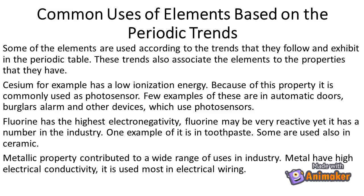Chlorine has the highest electronegativity. Although chlorine may be very reactive, it has a number of uses in industry — one example is in toothpaste, and some are also used in ceramics. Metallic property contributes to a wide range of uses in industry as well. Metals have high electrical conductivity and are used most in electrical wiring.